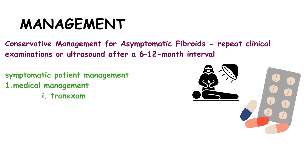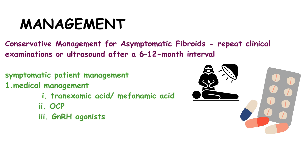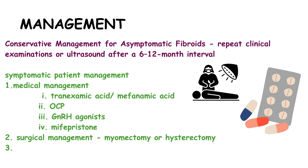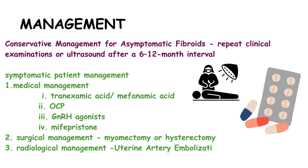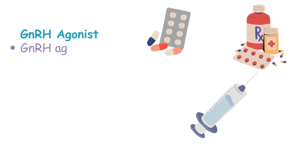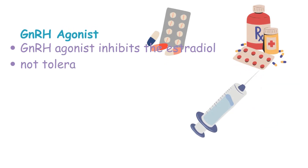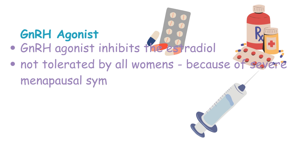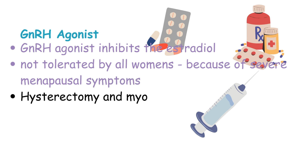As medical management, tranexamic acid or mefenamic acid, OCP, GnRH agonists, and mifepristone can be used. GnRH agonists inhibit estradiol production and reduce estrogen, but they are not tolerated by all women because of severe menopausal symptoms.